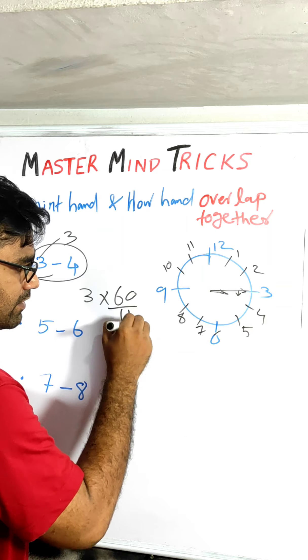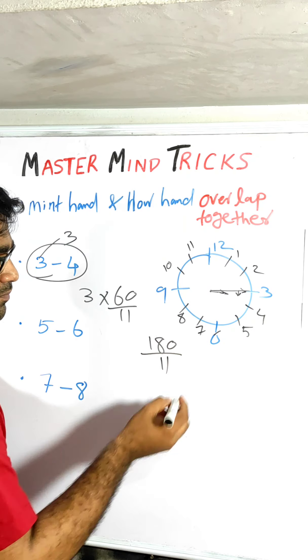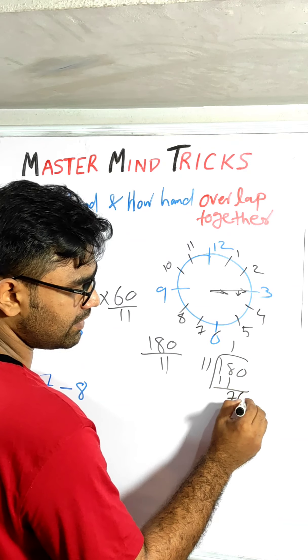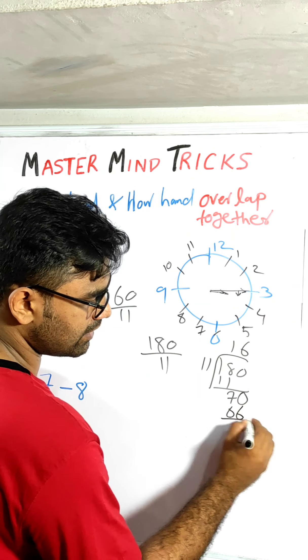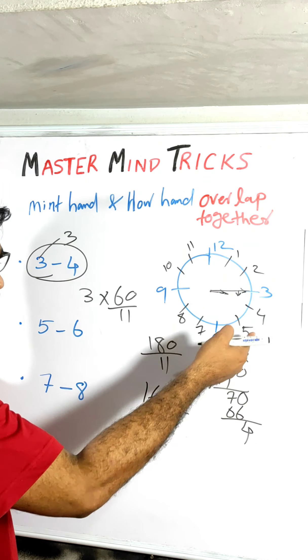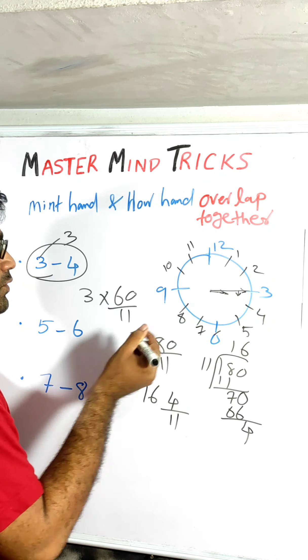So, 3 times 60 by 11 is 180 by 11. If you add the answer to the fraction, it will be 11, 7, 76, and 16, 4. It's 16, 4 by 11. After 3, we have 14, 40 minutes. We can overlap this.